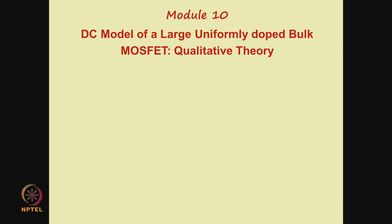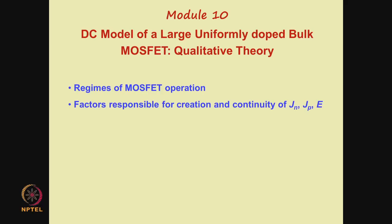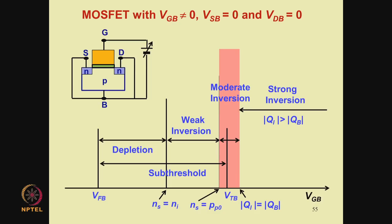In this lecture, we are going to discuss the following points. First, we shall complete the regimes of MOSFET operation — we will introduce a bulk-to-source bias and later a drain-to-bulk bias. Then we shall list out the factors responsible for creation and continuity of Jn, Jp, and E. We shall explain the shape of the ID-VDS, ID-VGS, and IB-VGS curves based on the charge conditions in the device. Reverting to the various regimes of operation of a MOSFET for drain-to-bulk and source-to-bulk voltages equal to zero.